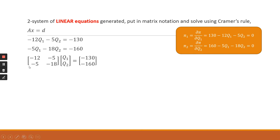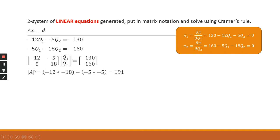We have the 2×2 matrix A with coefficients −12, −5, −5, and −18, a column vector of unknowns Q1 and Q2, and the column vector of solutions (the d vector) with −130 and −160. To use Cramer's rule, we first find the determinant of matrix A by multiplying diagonal elements and subtracting the product of off-diagonals. The determinant equals 191, which is not equal to zero, meaning a unique solution exists.